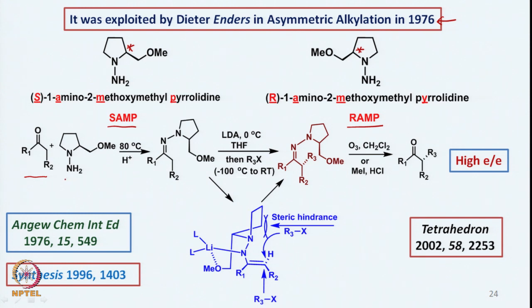If we take a ketone and react with one of the SAMP or RAMP hydrazines at 80°C, we get the corresponding imine (hydrazone). When this is reacted with a base at 0°C, the temperature is lowered to −100°C and then slowly brought to room temperature. This leads to introduction of the R₃ group as an electrophile forming the C-C bond. Then we cleave by ozonolysis or methyl iodide or hydrochloric acid — ozonolysis directly gives the product, while methyl iodide gives methylation on the imino nitrogen followed by cleavage of the ammonium ion — yielding the ketone in very high enantiomeric purity.